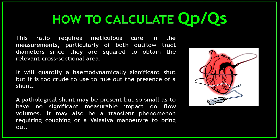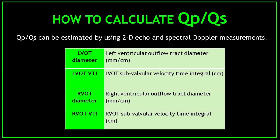A pathological shunt may be present, but so small as to have no significant measurable impact on flow volumes. It may also be a transient phenomenon requiring coughing or Valsalva maneuver to bring out. QPQS can be estimated by using 2D echo and spectral Doppler measurements. You only need four things to obtain the QPQS ratio.